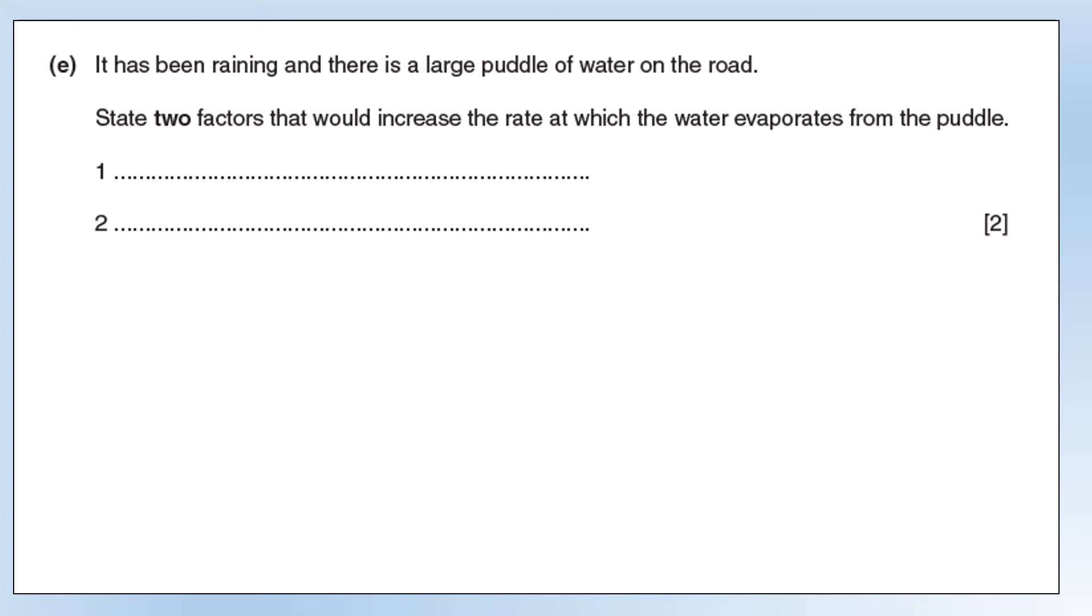It's been raining and there's a large puddle of water on the road. State two factors that would increase the rate at which the water evaporates from the puddle. There are actually four I think you could go with, but you could have any of these two. We could increase the surface area of the water. We could increase the temperature of the water because then more molecules will have enough energy to escape. We could also increase the wind speed or we could decrease the humidity of the air above the puddle. All of those factors would increase the rate of evaporation.